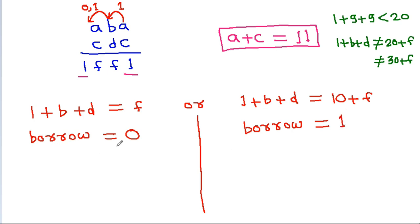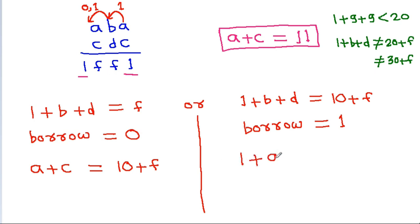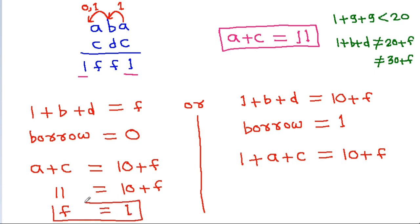If 1 plus B plus D equals F, then the carry is 0, and A plus C will give 10 plus F. If the carry is 1, then 1 plus A plus C equals 10 plus F. So F will equal 1 in the first case, and F will equal 2 in the second case.